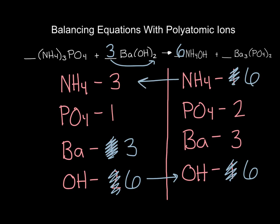Following the ammonium change back to the reactant side: I currently have three ammoniums and need six, so I multiply by two — placing a two in front of ammonium phosphate. That changes ammoniums to six, which matches, and changes phosphates to two. Examining the product side, the phosphates are now balanced. Everything is balanced: two ammonium phosphates, three barium hydroxides, six ammonium hydroxides, and one barium phosphate.